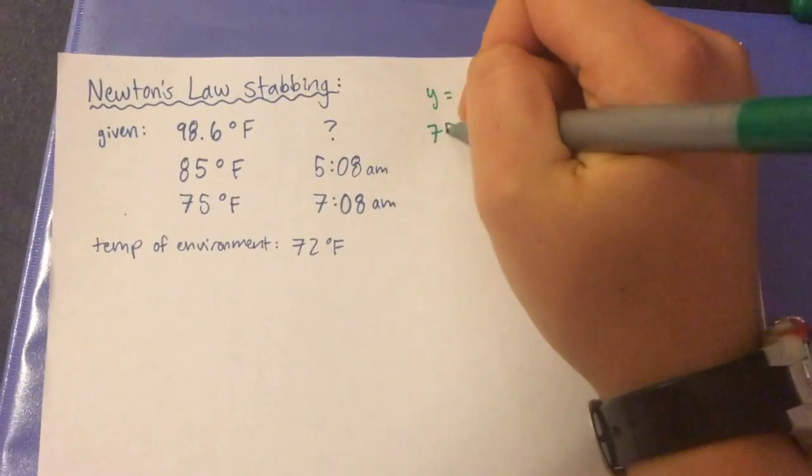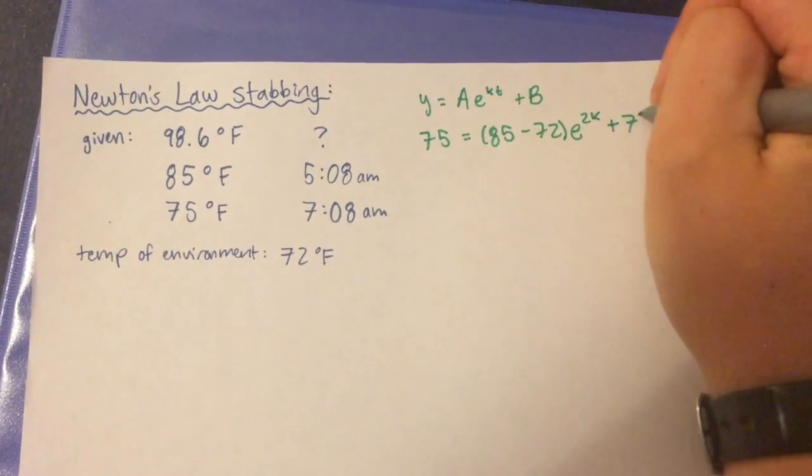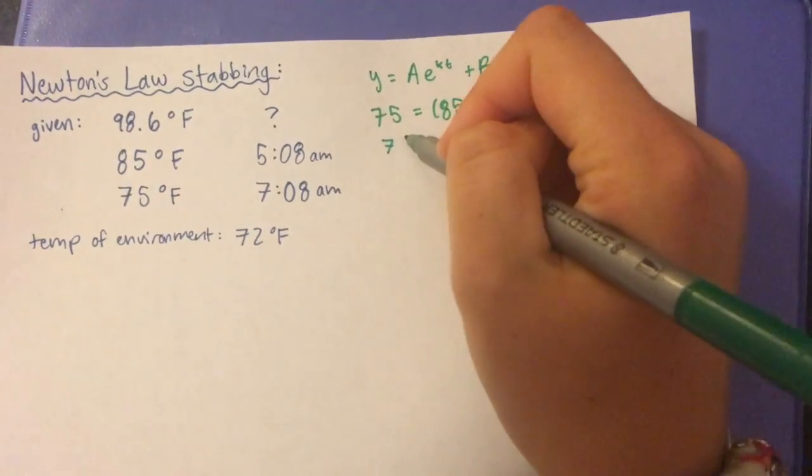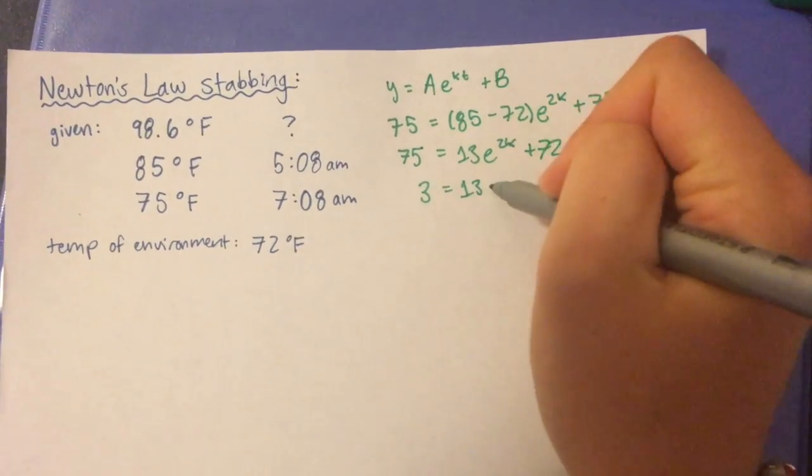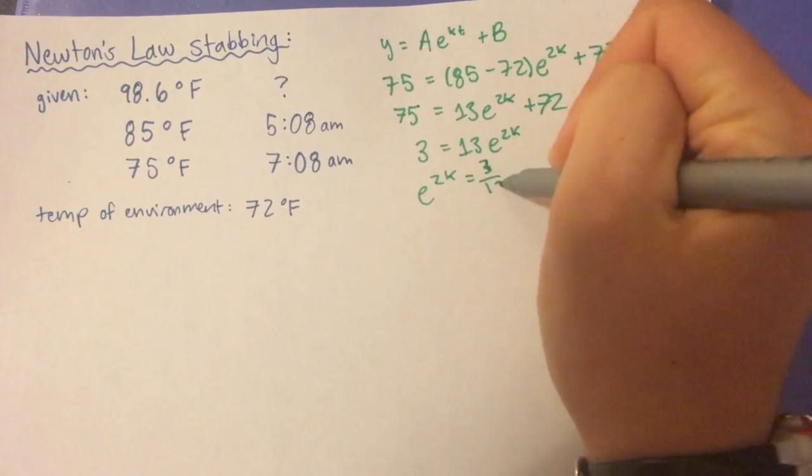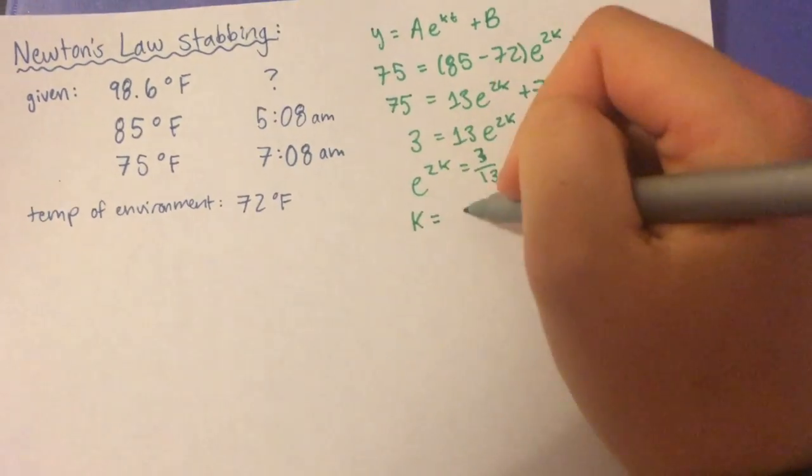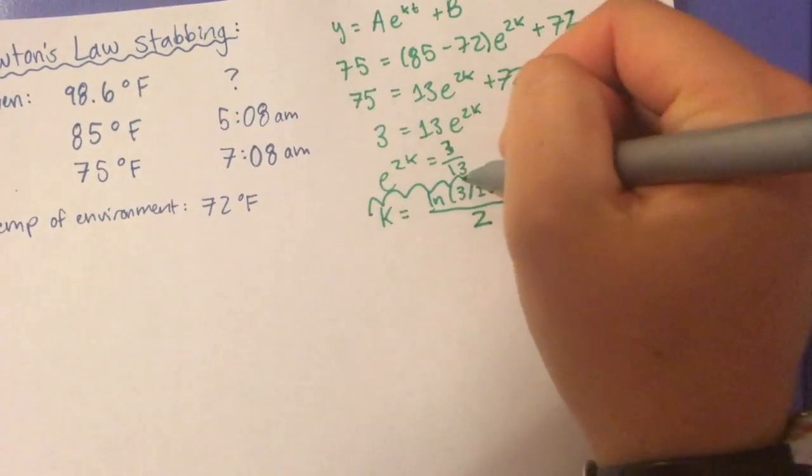First we're going to start with y equals a times e to the kT plus b, and simplify for k by plugging in the values that are given on the left, which are the different times and temperatures of the corpse. Then we can simplify this down to find k equals the natural log of 3 over 13 all divided by 2.